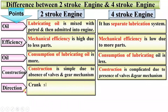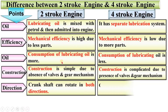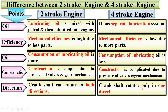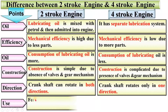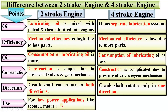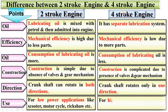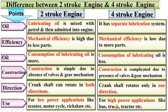Next, direction. The crankshaft can rotate in both directions in case of a two-stroke engine. Whereas, in case of a four-stroke engine, the crankshaft rotates only in one direction. Next, use: two-stroke engines are used for low-power applications like scooters, motorcycles, rickshaws, etc. Whereas, four-stroke engines are used for high-power applications like buses, trucks, tractors, etc.